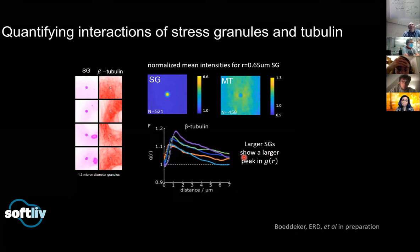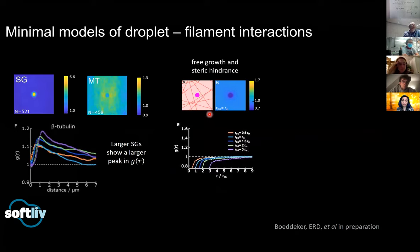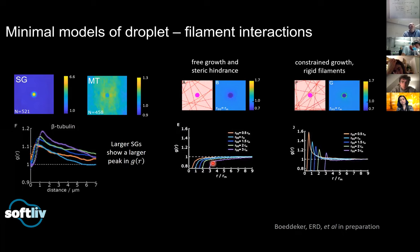Clearly there's some interaction between the stress granule and the microtubule. We're designing, with the help of Cliff, new cell biology experiments to get to the bottom of this interaction, and we're also doing simple computational modeling. One simple thing we can do is make a model microtubule network of randomly oriented rods, put in objects of a certain size relative to the mesh, and allow them to be placed as long as the stress granule and the microtubule don't overlap. When we do that, we see nice exclusion of microtubule intensity in the middle, but no enhancement at all.